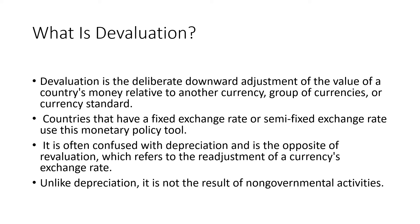Before understanding the Marshall-Lerner Condition and J-Curve, it is very important to understand the meaning of devaluation. Devaluation involves a deliberate downward adjustment in the value of a particular country's currency in terms of the value of some other country's currency, or in terms of a group of currencies, or in terms of a currency standard. The central bank of the country would reduce the value of a particular country's currency in terms of some other country's currency.